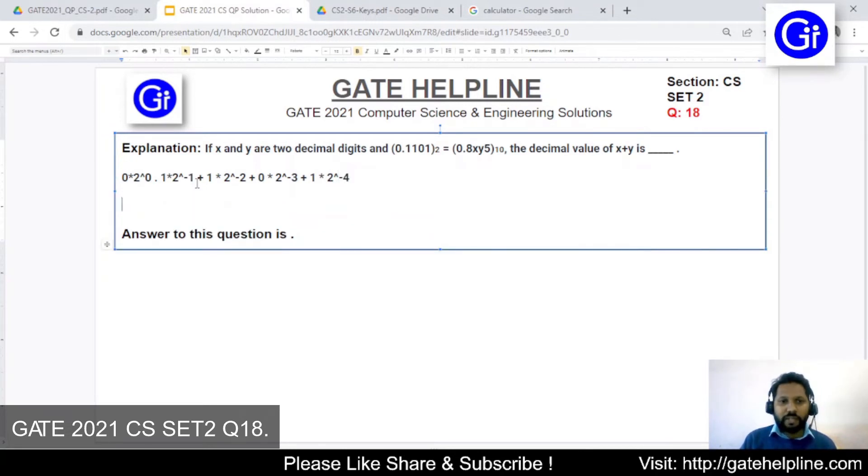Now we have the statement ready which we just need to calculate and get the decimal representation. This value will result in 0 because 0 multiplied by anything is 0. Now this value is multiplied by 1 so we need to calculate this sum. 2 raised to power minus 1 will be 1 upon 2, which is 0.5.